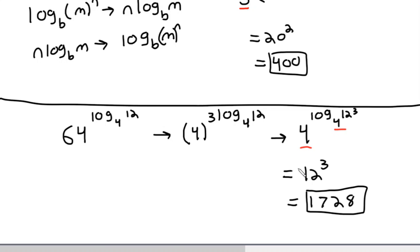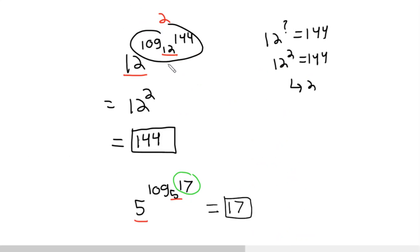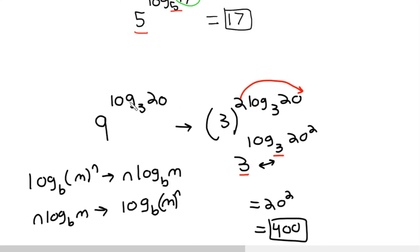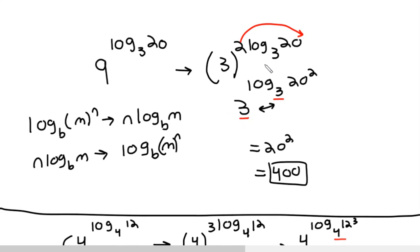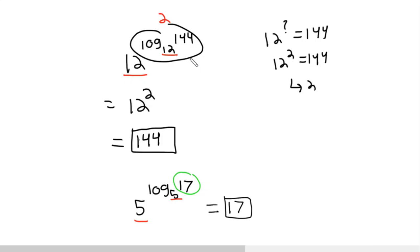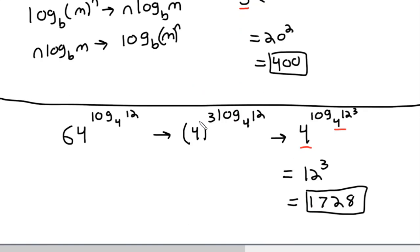And that's it. So if the bases were already the same, you could just cancel and get your answer directly. If they're not the same, you have to do some manipulation to match the bases, bring the coefficient up as a power to the argument, and then cancel. Hope this helps. If you have any requests for other videos, feel free to let me know, and as always, thanks for watching.